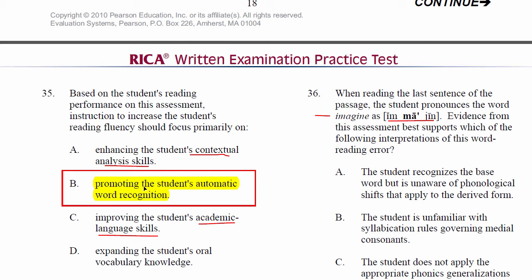You would want to promote the student's automatic word recognition, especially of polysyllabic words — that's what you would want to do. Self-corrections are good; it means the student is engaged and eventually figures out what to do after stumbling. But that is not fluent reading. Fluent decoding is automatic word recognition with no pauses, no self-corrections, none of that sort of thing.